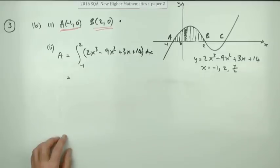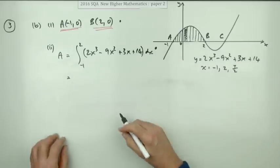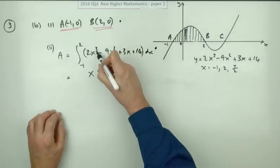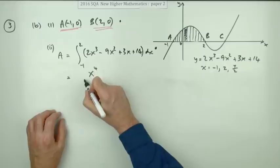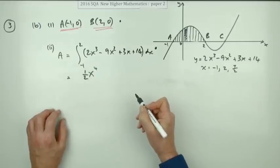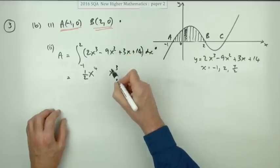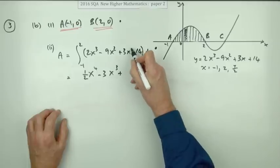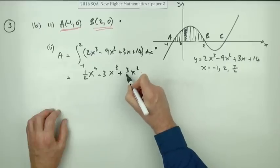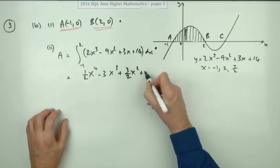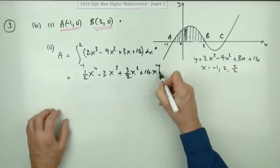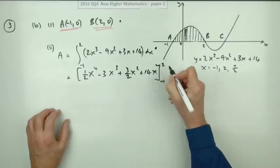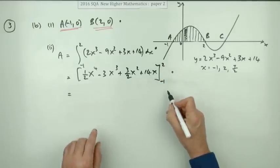Writing down the integral gets the first mark — noting that the dx must be included to earn it. Integrating: add one to each power and divide by that power. So 2x³ becomes one half x⁴; minus 9x² becomes minus 3x³; plus 3x becomes plus 3 over 2 times x²; and 14 becomes 14x. Integrating earns the second mark, with limits negative one to two in place.